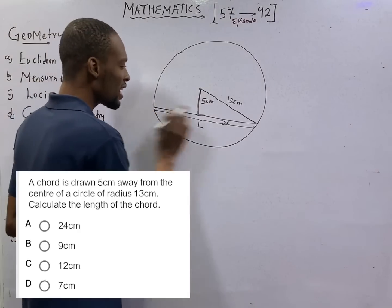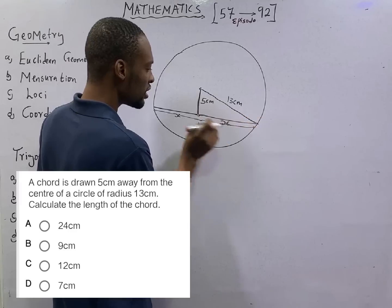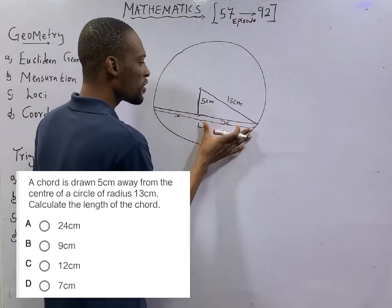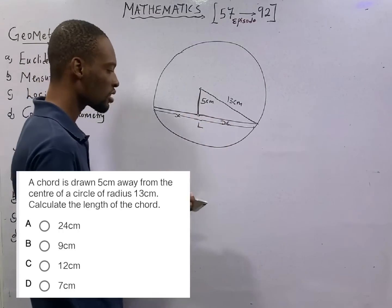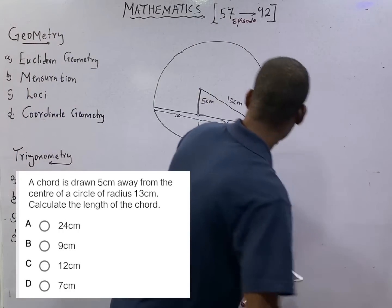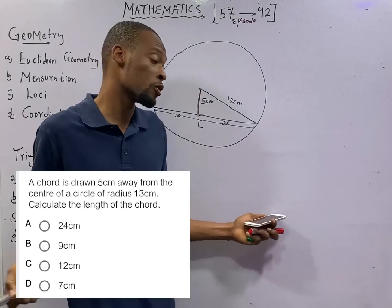Knowing that here is the center, from here to here is half the length, and from here to here is half the length. If we can get one half and multiply by 2, we will get the full length of the chord.